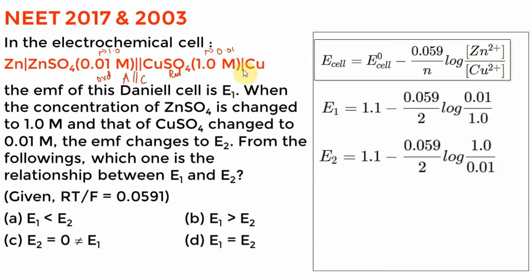Log of 10⁻² is −2. Minus times minus is plus, so you are going to add to E1. Whereas for cell 2 you are going to subtract. So E1 is greater than E2. That is actually a long way of doing it. The shortest way: just identify what is a product and what is a reactant. I am increasing my product and decreasing my reactant — increasing product and decreasing reactant means you are going toward equilibrium. Q approaches K. So E1 is bigger. Option is B.